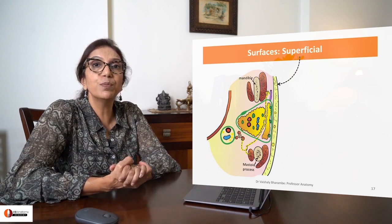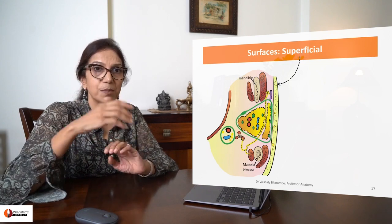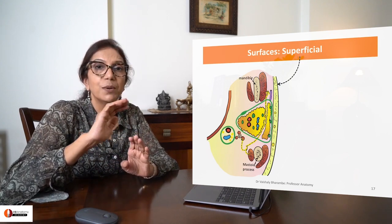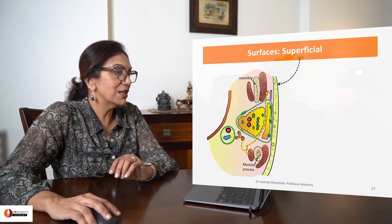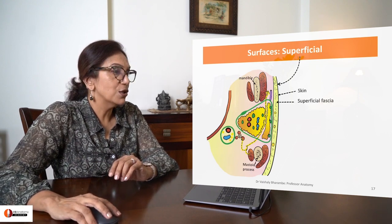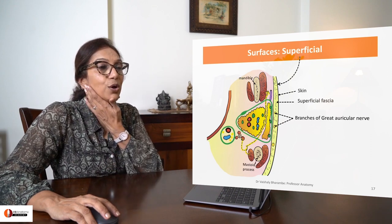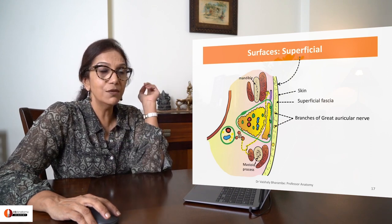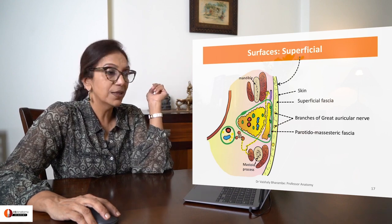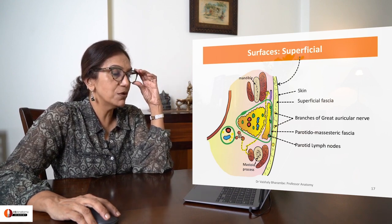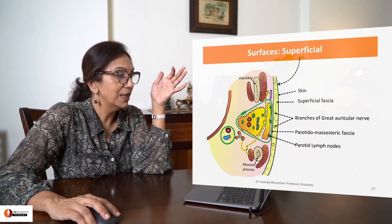Now let us talk about the superficial surface. This is the surface related to skin, superficial fascia, the branches of the great auricular nerve, the parotidomasseteric fascia, and a couple of lymph nodes which are present on the superficial surface of the gland.